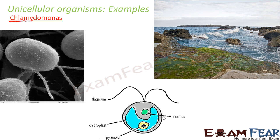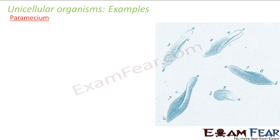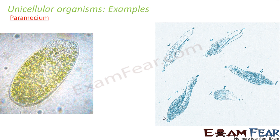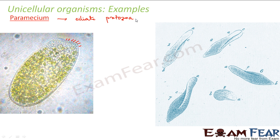The next example is paramecium. Paramecium is a kind of ciliate protozoa. Ciliate protozoa means protozoa with cilia — cilia are small hair-like structures covering the body of the organism. Paramecium is generally found in freshwater or marine environments, or in stagnant ponds or basins. Most of these microorganisms are generally found in damp places.